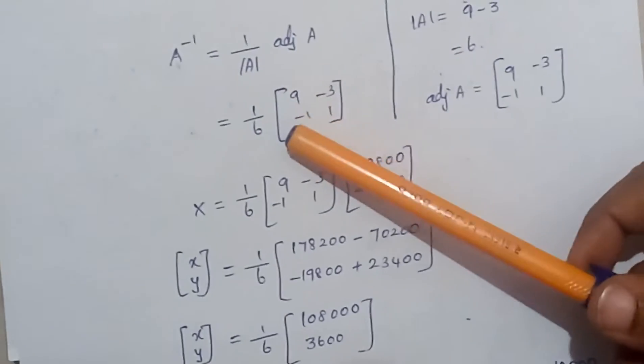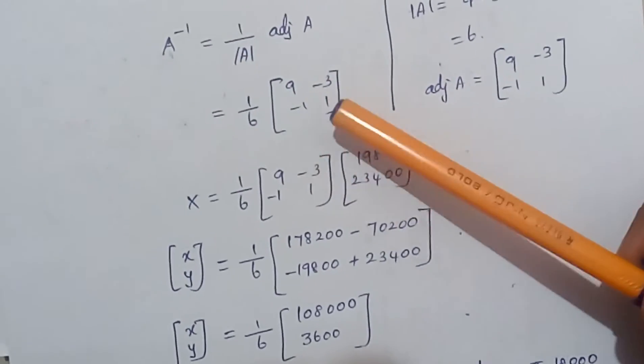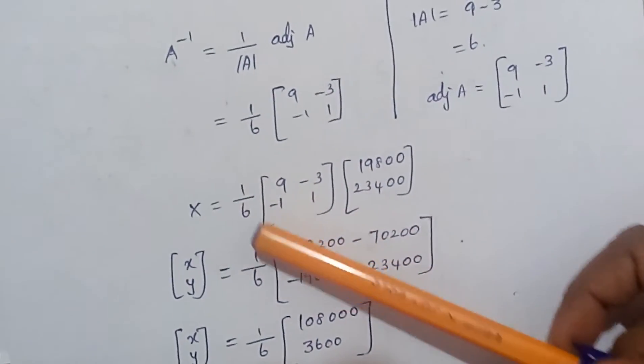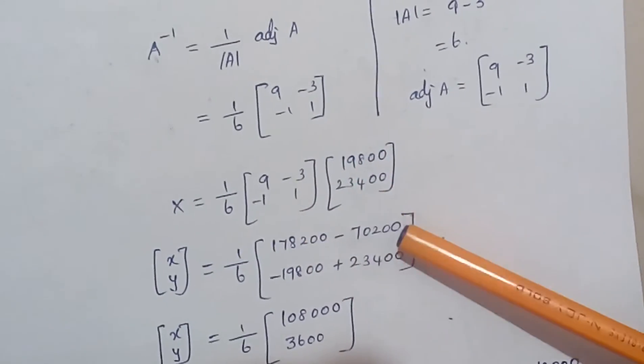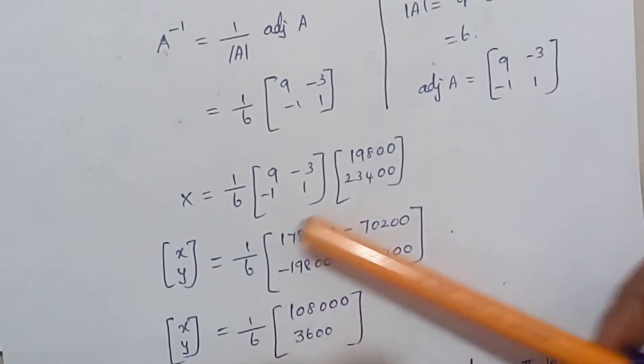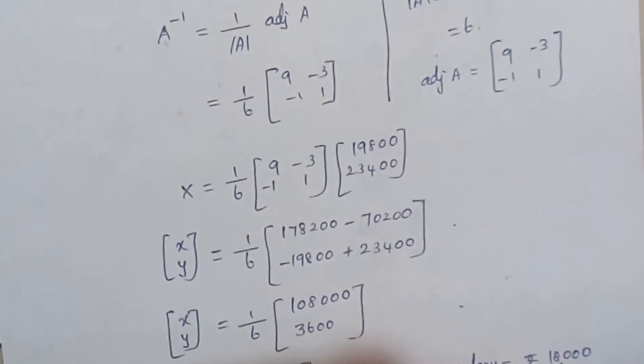A inverse equals 1 by 6 times [9, -3; -1, 1]. X equals A inverse into B. As usual multiplication, we get this answer. Subtract these terms and divide by 6.